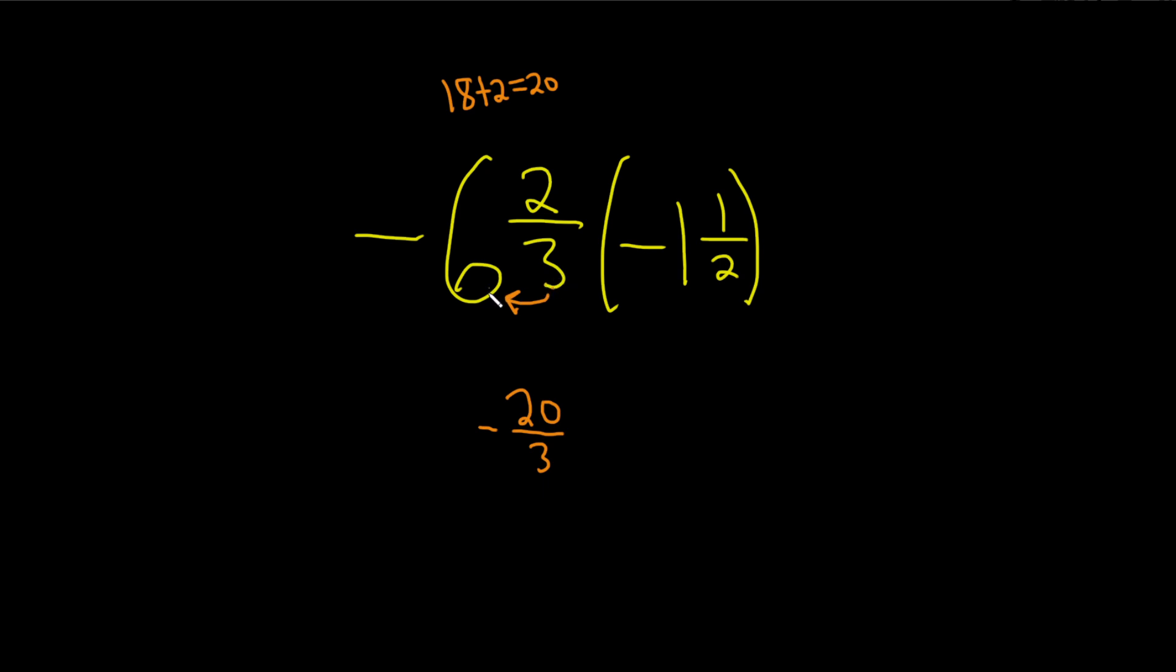So again, 3 times 6 is 18, 18 plus 2 is 20. Let's go ahead and put the times symbol here. There's no symbol here, but it does mean multiplication, so we can actually just add it. Same thing here. 2 times 1 is 2. Then you add the top number, so you get 3. So this is negative 3 over 2.